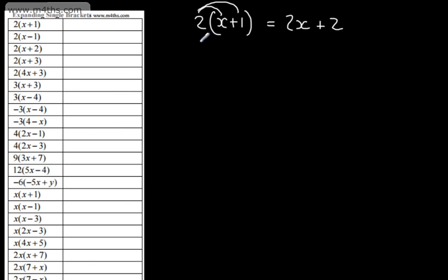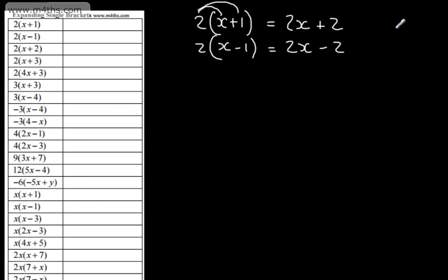If we look at the next one, we have the same values but we have now the minus. Well, 2 times by x is 2x, and 2 times by 1 is 2, but instead of adding it, we're going to subtract it. That is the difference between them. A common error that's made here is that students write that this is going to be 2x plus 1 — they don't multiply the 2 by the 1. That is not correct.